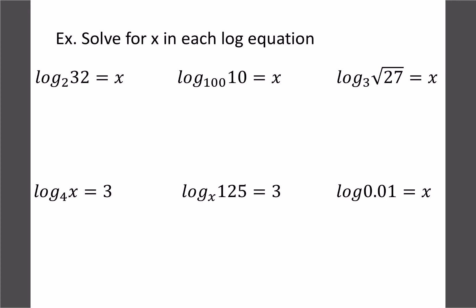Let's actually solve these. We'd have 2 to the x equals 32, and we can solve these like we did before. Change the 32 to be 2 to the 5, so that means x equals 5. The next one we'd have 100 to the x equals 10, so we change the 100 to be 10 to the 2, so 10 squared, and that'd be like 10 to the 1. We'd have 2x equals 1, so x would be one half.